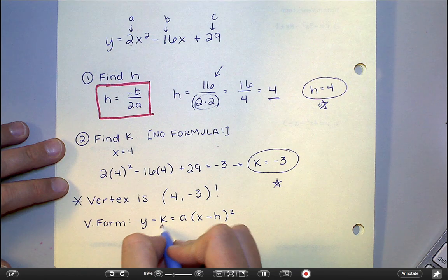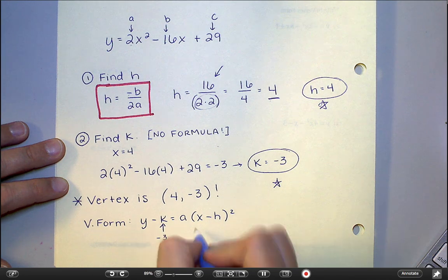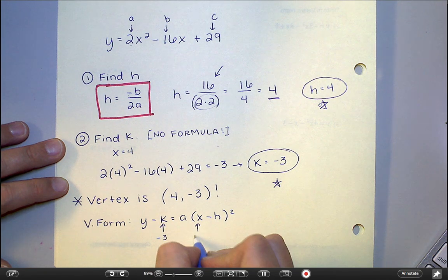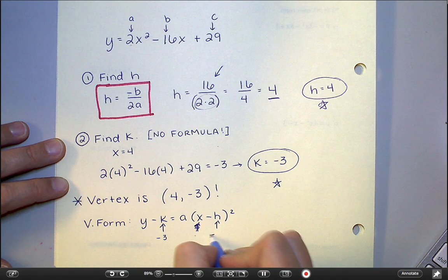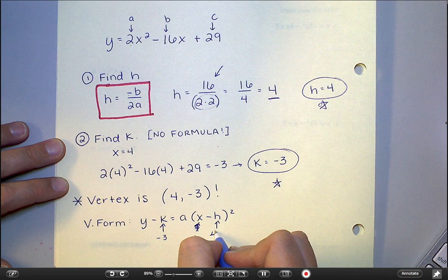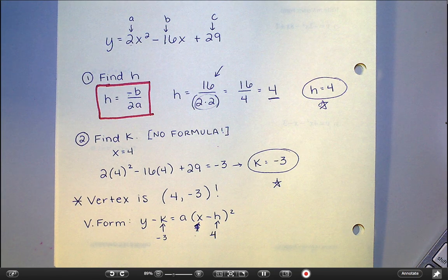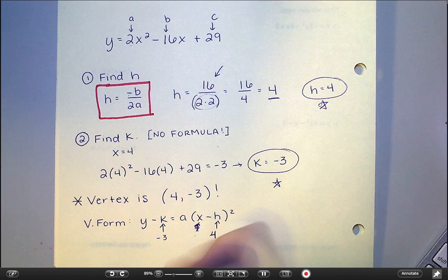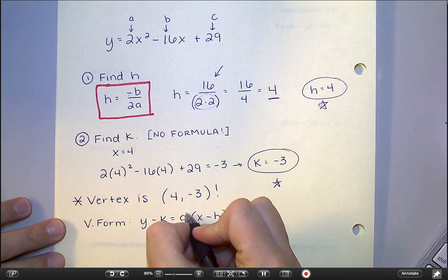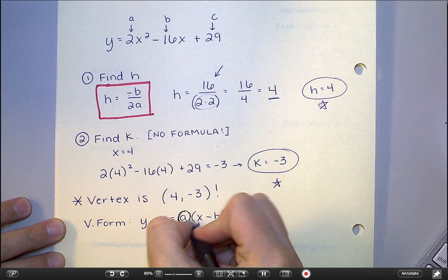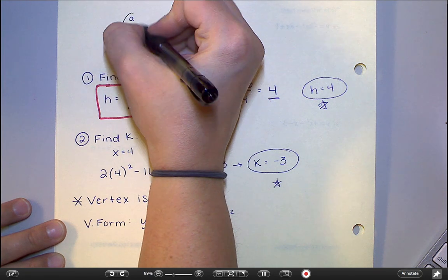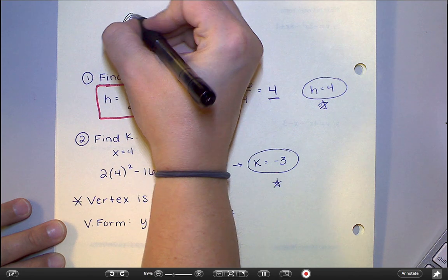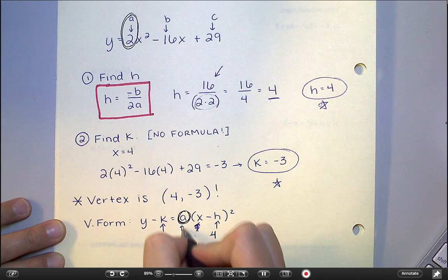And so all I'm really doing is I'm plugging in h and k. So this is going to be a negative 3. This is going to be a positive, whoops, sorry, not the x, the h. The h is going to be a positive 4. And then the only other number I need is my a value. And this does throw people off sometimes. But this a value is really always going to be the same as my a value from my original equation. This right here. So my a value is just going to be a 2.